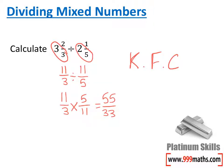Now, this fraction can be simplified. So, I'm going to divide by 11 and end up with 5 over 3.